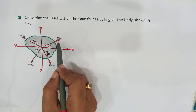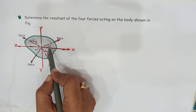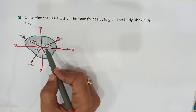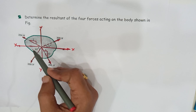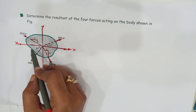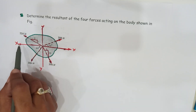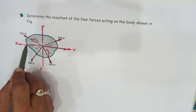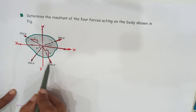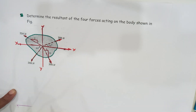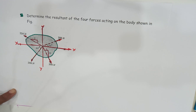The inclination of the 300 Newton force with the x-axis is 30 degrees, and the 200 Newton force with the x-axis is 60 degrees. However, the inclination of the 224 Newton force and the 390 Newton force with the x-axis are not given directly, so we have to find those inclinations.